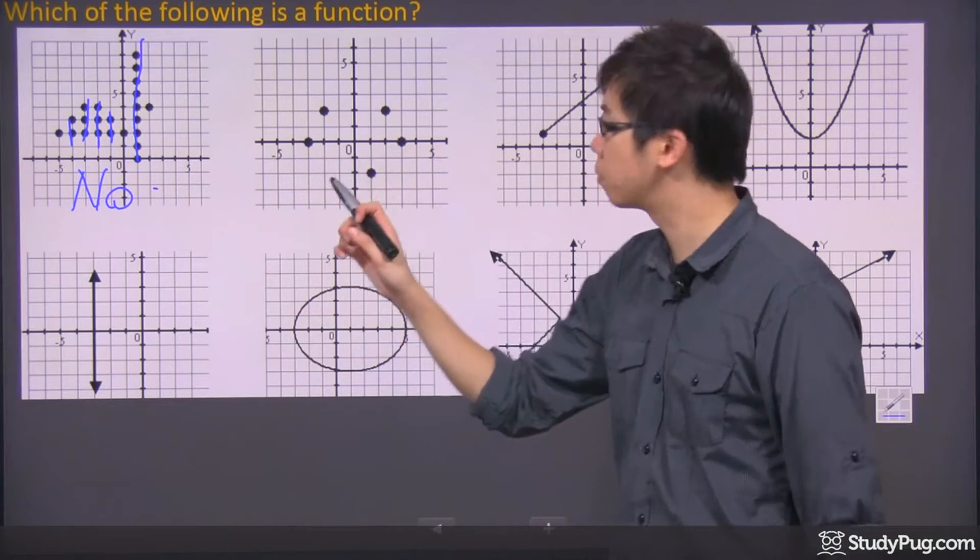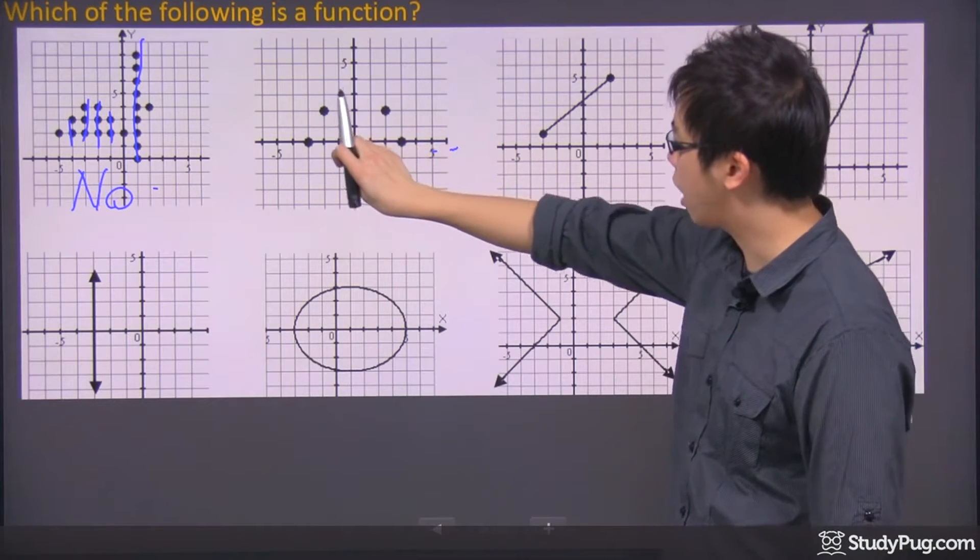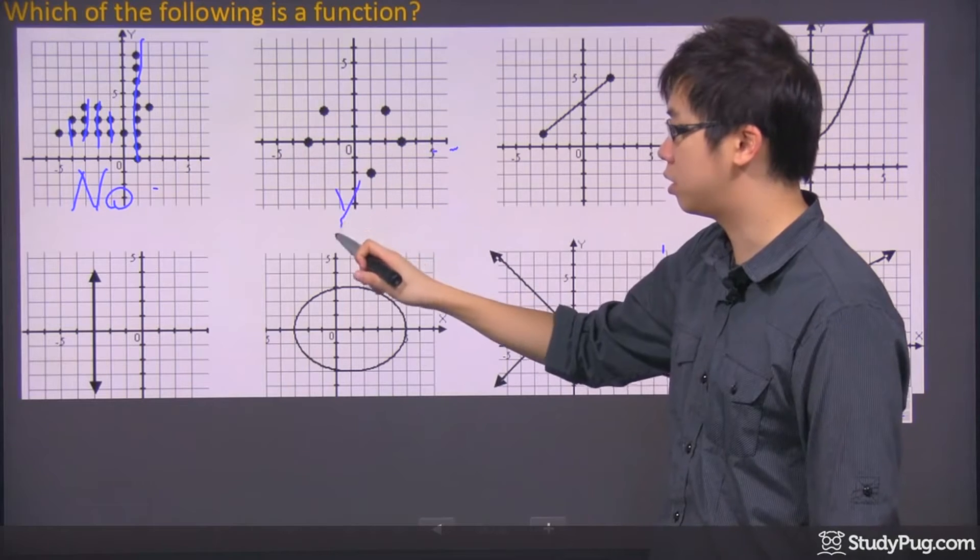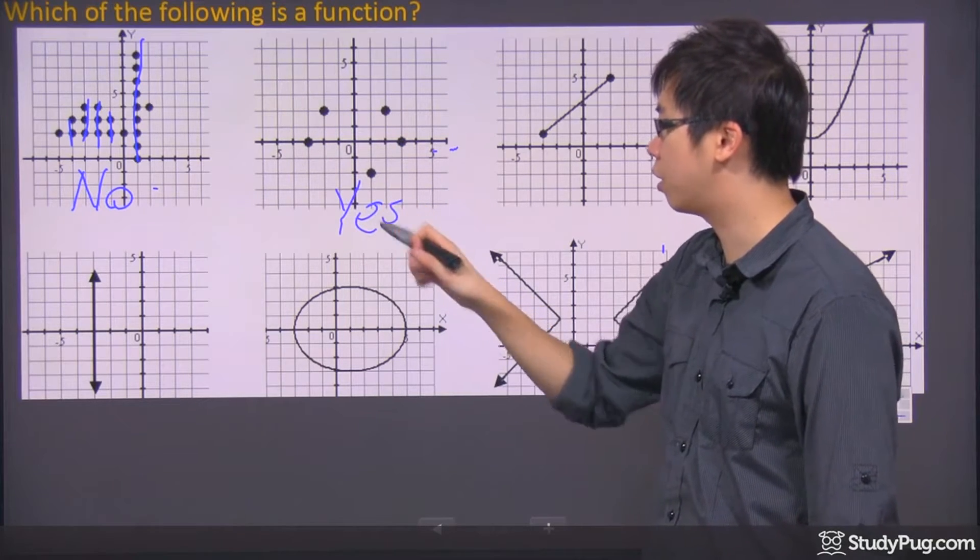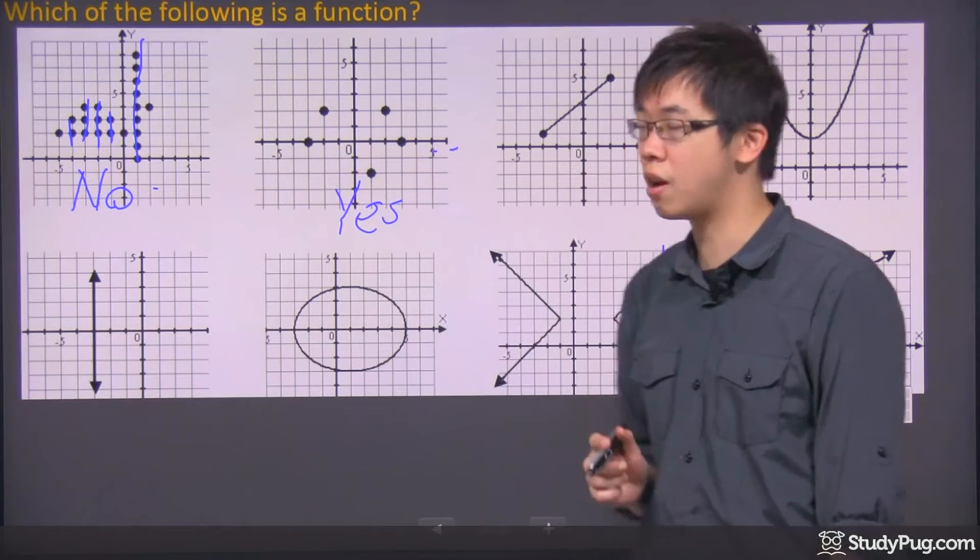Let's try the second one over here. Once again, you move it across - pass, pass, pass, pass, pass. This one is yes, it does pass the vertical line test. Therefore, it is a function.